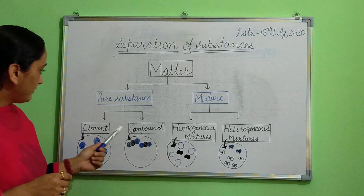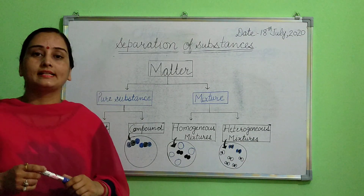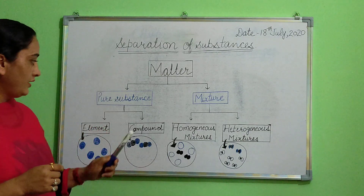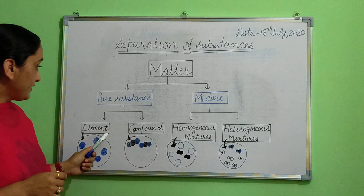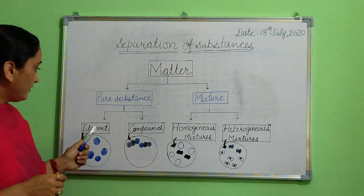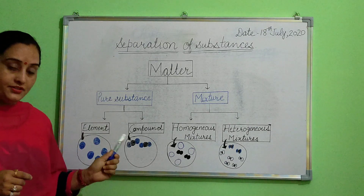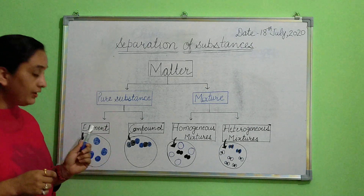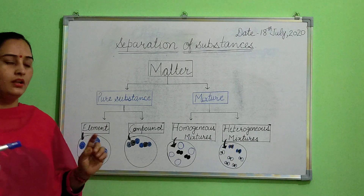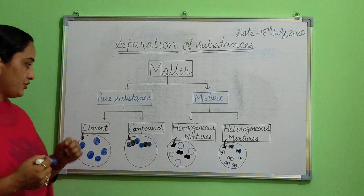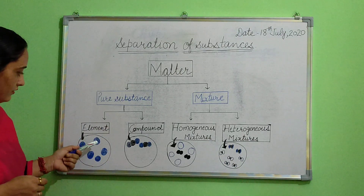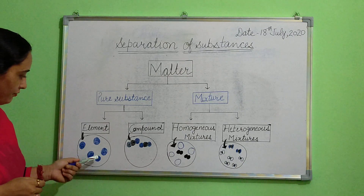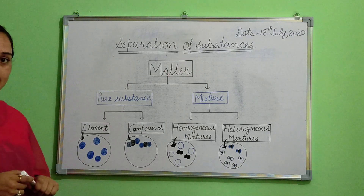And compounds, for example, include water, sodium chloride, etc. As we can see in this figure, an element has only one kind of particle. For example, hydrogen — hydrogen is made up of only hydrogen particles.